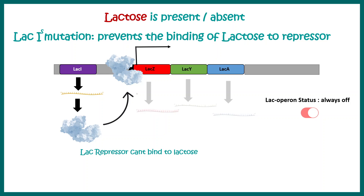The third type is lac Is, also known as the super repressor. It prevents the binding of lactose to the repressor. This repressor can still bind to the operator sequence, so when lactose is absent it represses the operon normally. However, when lactose is present, allolactose cannot bind to this repressor due to a defect in its binding domain, so the operon is never induced. Whether lactose is present or absent, the lac operon is always inactive.